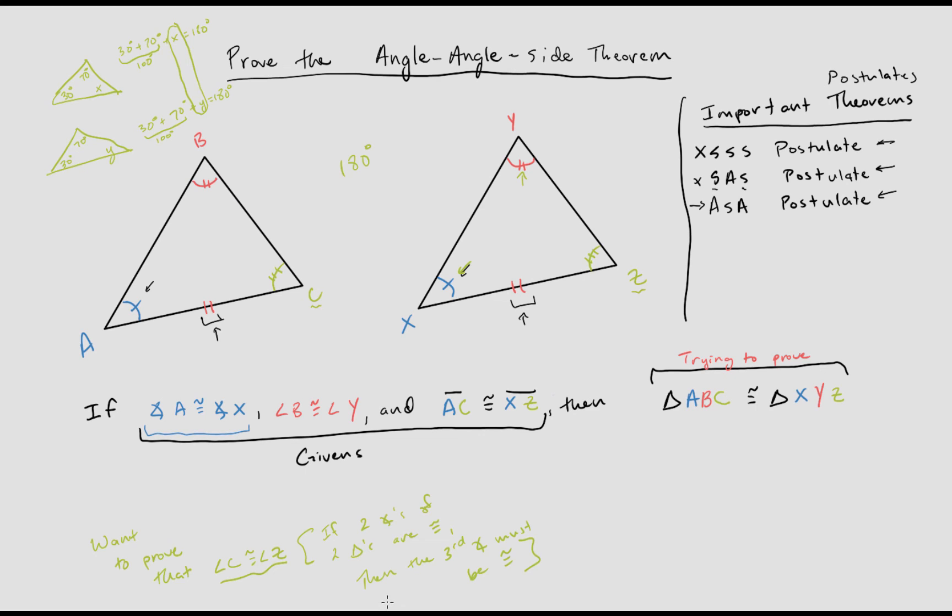But then what we've now shown is that we know that these are congruent. And based off that, we have enough to say that these triangles here are congruent and we can prove that based off of the angle side angle postulate. And so we've now proven that if we just start with angle angle side, we can in fact prove that they're congruent. And so we can now add that to our important theorems list here so that we don't have to prove this every single time.